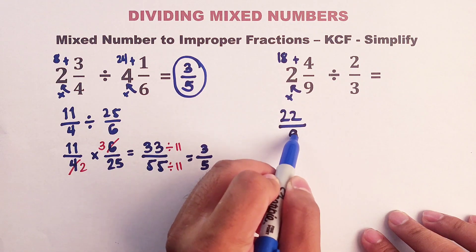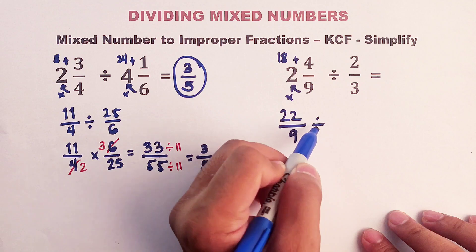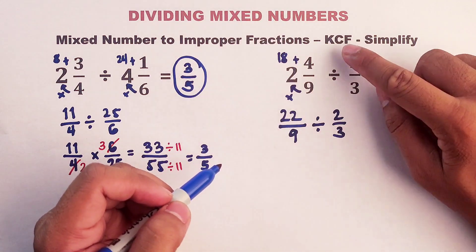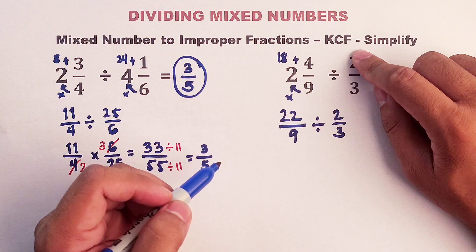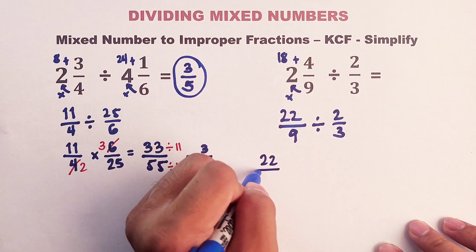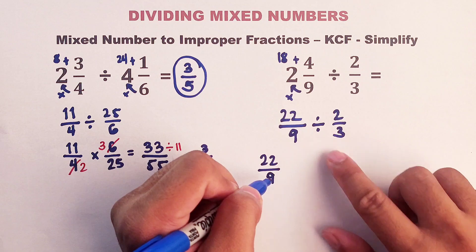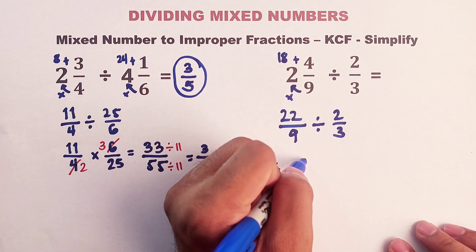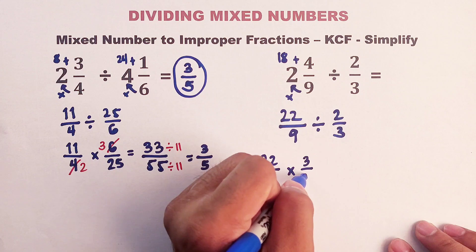over your 9. Then copy this one. And then 2 over 3. So we are done with this one. Let's proceed with keep, change, and flip. Keep this one. We have 22 over 9. Change this to multiplication. Flip or get the reciprocal that is 3 over 2.